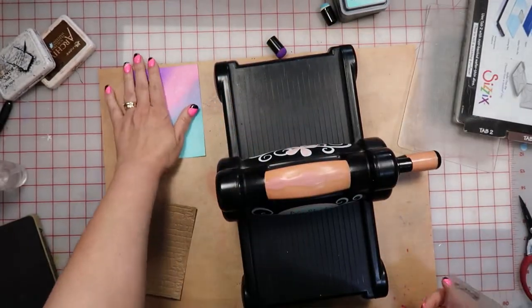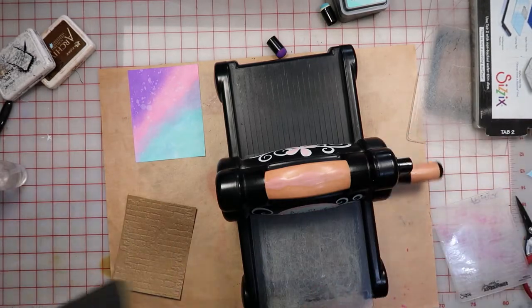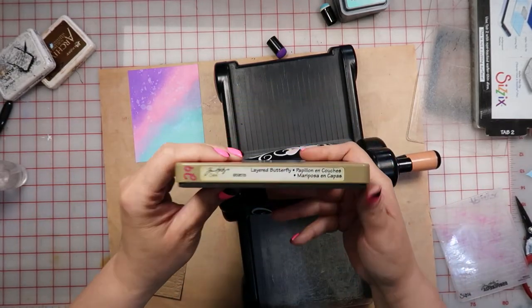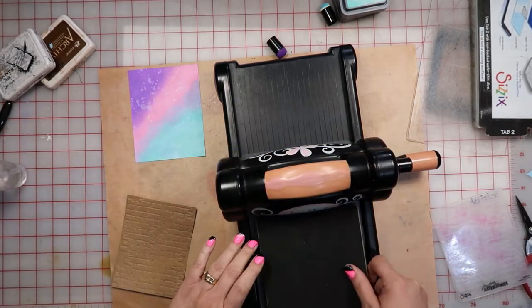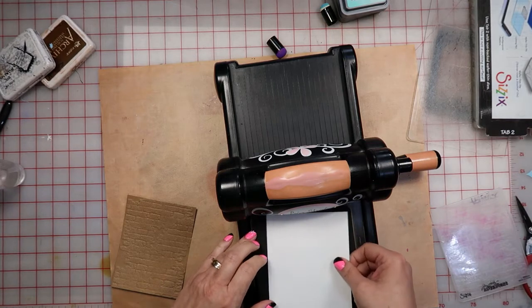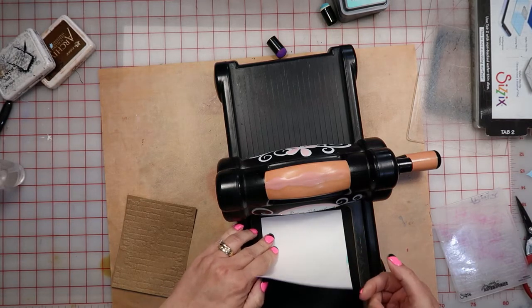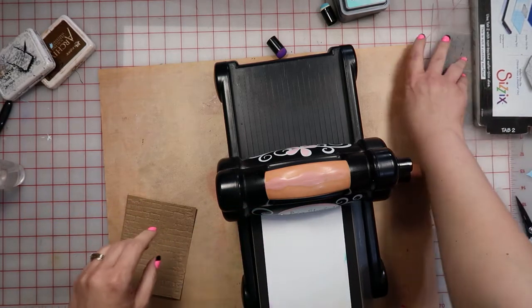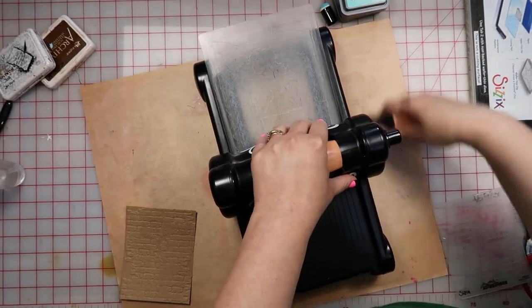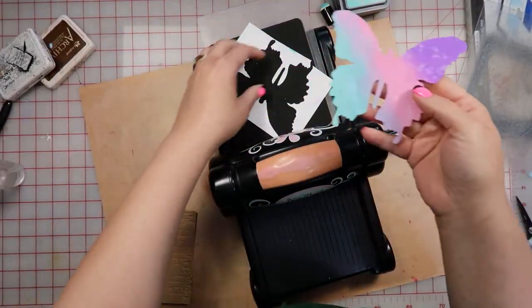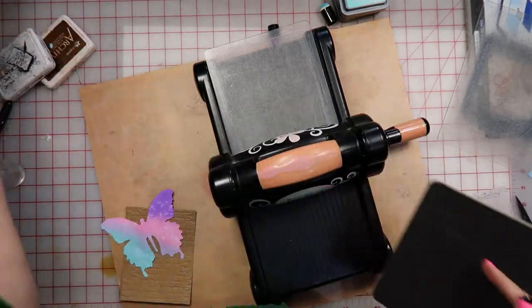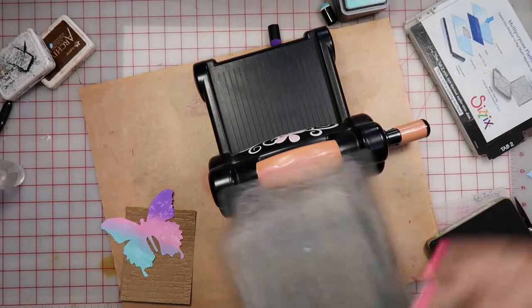And then now that this has had a chance to dry, I'm going to cut this. I've got the Tim Holtz again Alterations, it's the Layered Butterfly die. Again it's another old one, but if you've got any butterfly die, it'll work. It doesn't have to be this one in particular. I'm going to lay that in there, make my sandwich, run that through my machine, and I've got this beautiful butterfly cut. All right, just move my machine out of the way here, we're done with the machine.